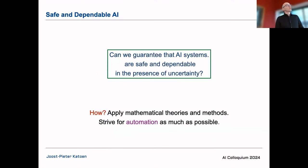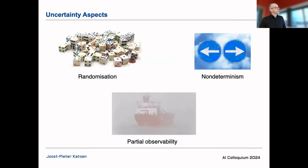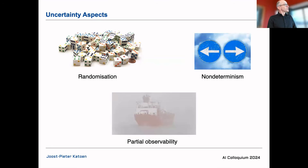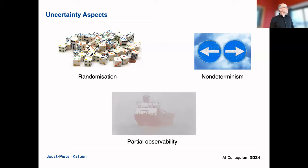The question at stake is whether we can guarantee that AI systems are safe and dependable in the presence of such uncertainty. I want to convince you that mathematical theories and methods can be applied here, and our group strives for automation — push-button technology. During this talk I'll treat three aspects of uncertainty: randomization (aleatory uncertainty), non-determinism where you literally have no clue what the environment is doing and sampling doesn't apply, and partial observability where you can only see partial aspects of the system.